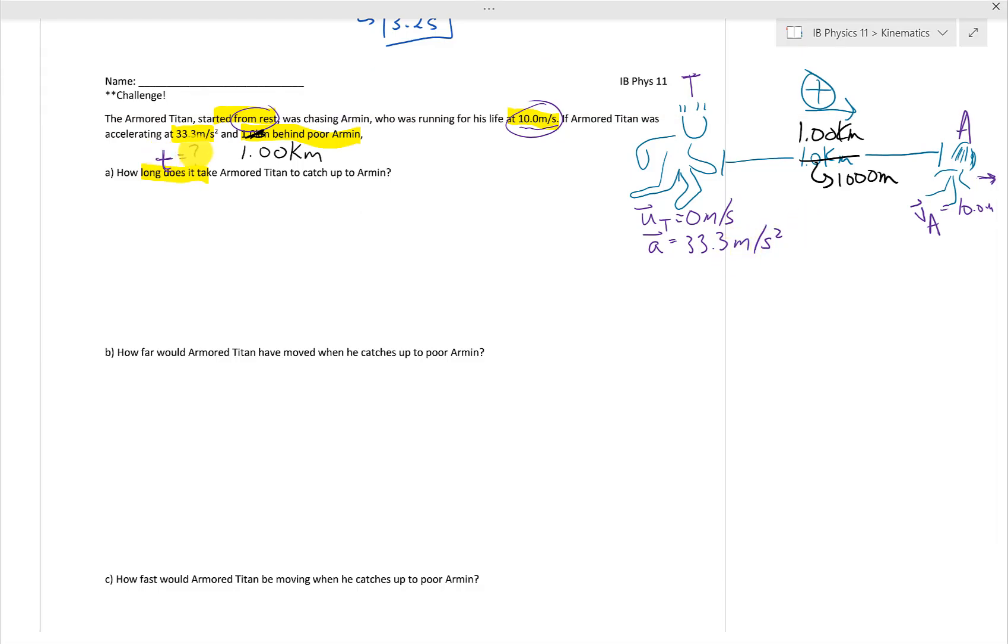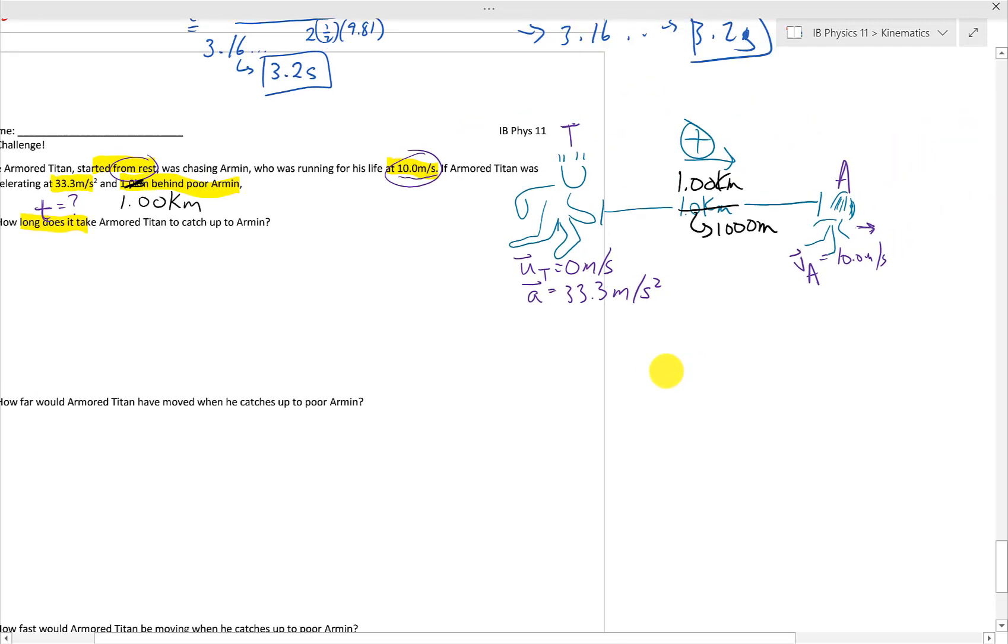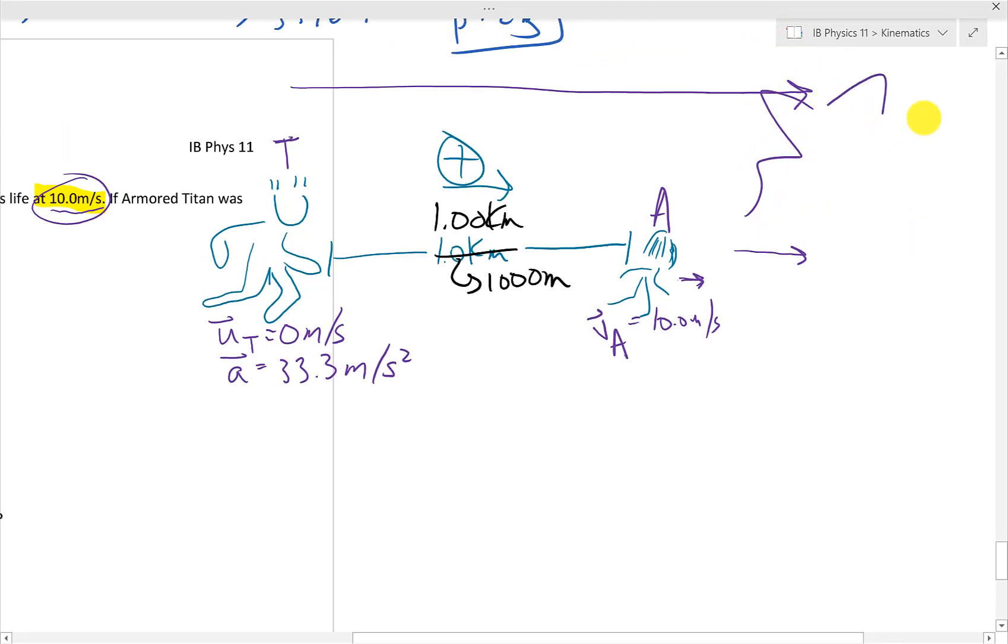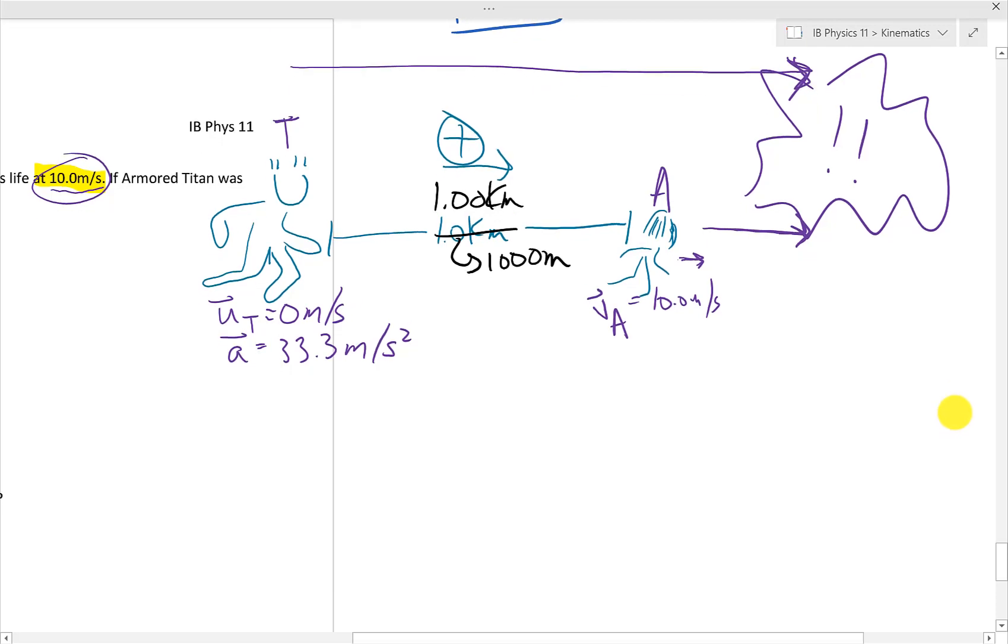We want to find the time it takes the Titan to catch up to poor Armin. Now, if we put this into perspective, if this picture here was paused in time, what would happen after the Titan catches up to Armin is that Armin would have ran maybe up to here. And the Armored Titan would have traveled this far, and they would have encountered each other sometime over here. So that is where they would meet up.